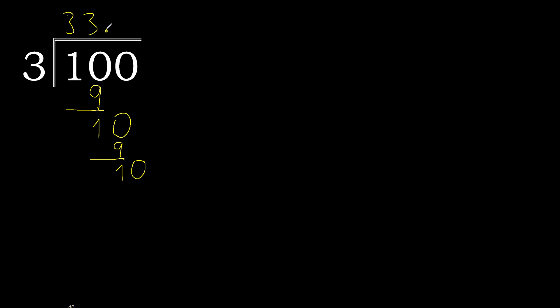With a decimal point, bring down 0 to make 10. 3 multiplied by 3 is 9 — subtract, complete. Always complete with 0, point is here.